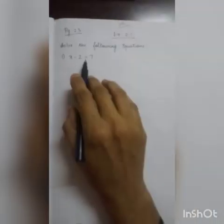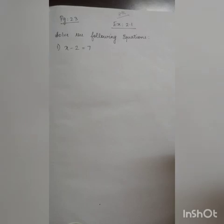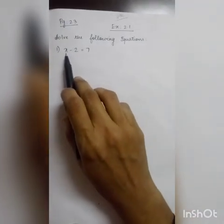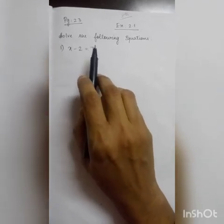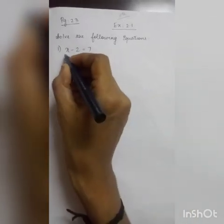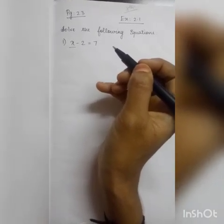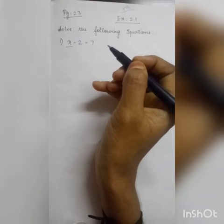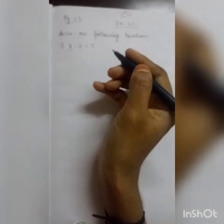Solve means we are going to find the solution for that equation. An equation consists of variables, constants, as well as the equal to sign — the equal to sign is a must in equations. Solution means here we are going to find the value of the variable x. The methods we have followed for finding the values of x are the balancing method and the transposing method. The same way we are going to solve here.